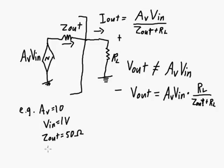And RL is equal to 1,000 ohms. So AV V in is going to be equal to 10 times 1 volt, so it's just equal to 10 volts.